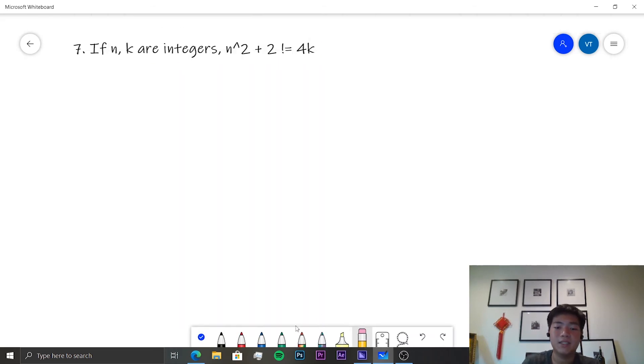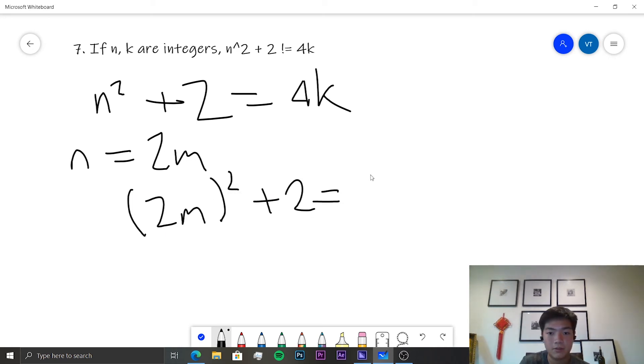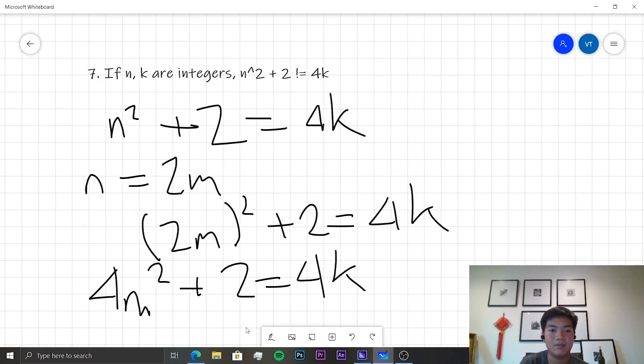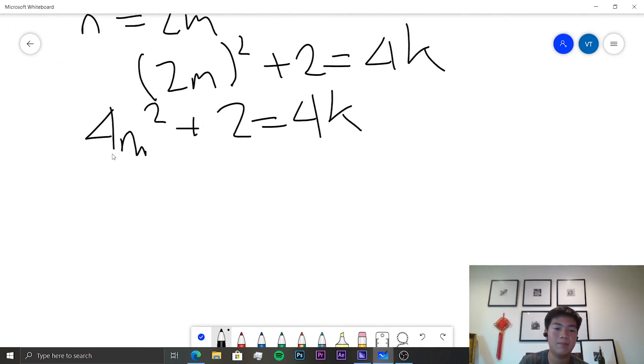So let's assume that there are some integers that for n squared plus 2 is actually equal to 4k and we'll work from there. So if n squared plus 2 equals 4k, it means that n is an integer. So we can set n to equal 2m. Now the thing is, this means that 2m squared plus 2 is equal to 4k. Which means that 4m squared plus 2 is equal to 4k. And this results in some issues.